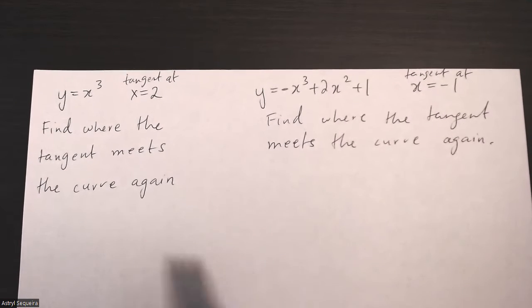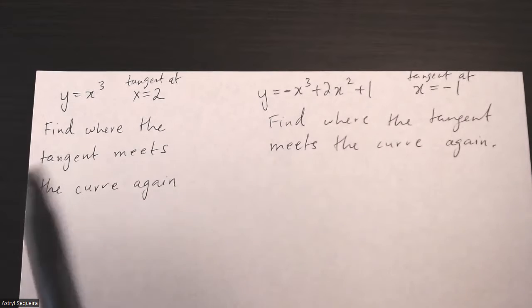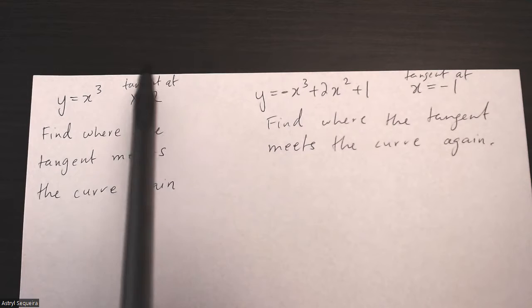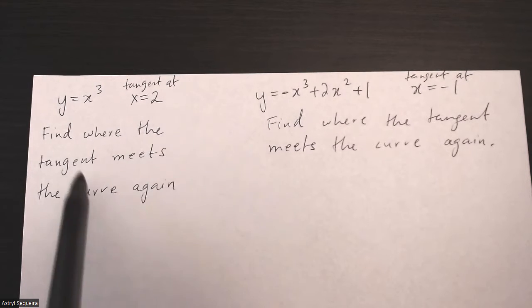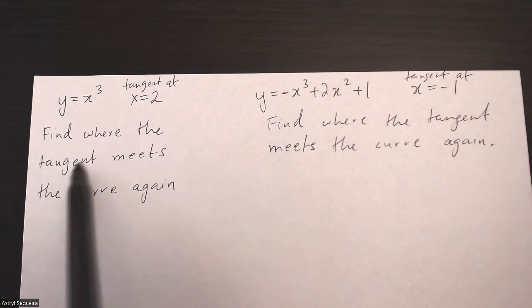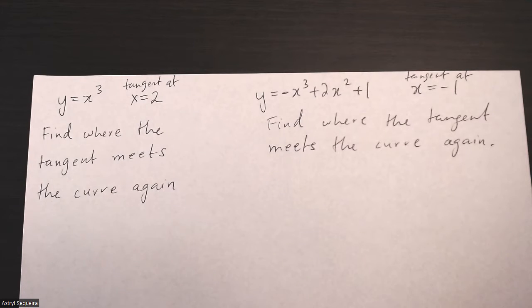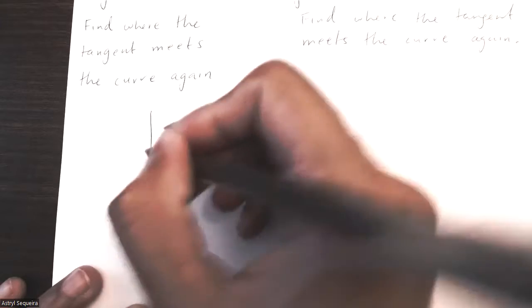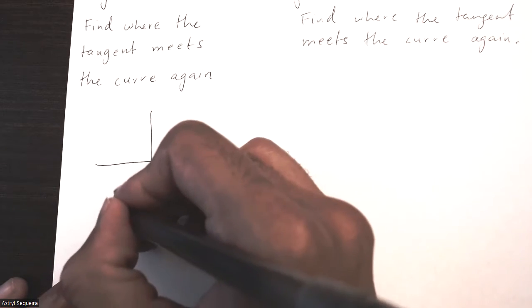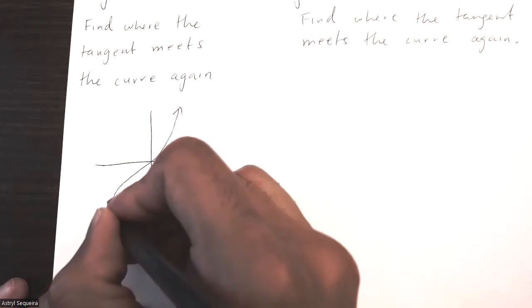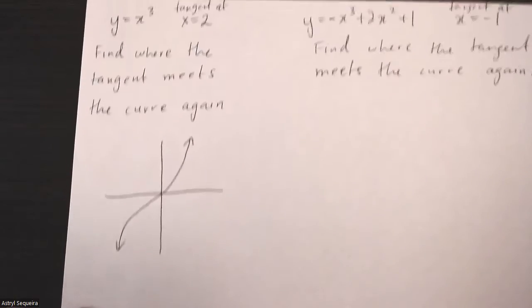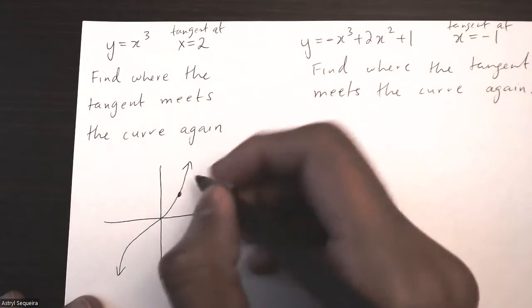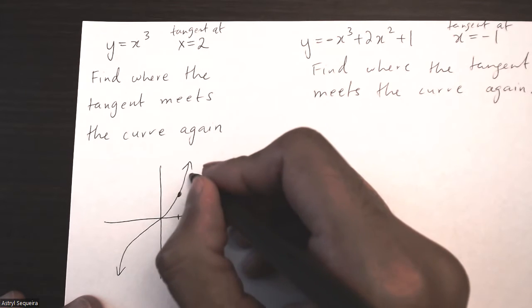In this video we have two questions. We have the equation y equals x cubed, a tangent line at x equals 2, and we need to find where the tangent meets the curve again. Let's sketch this situation out — y equals x cubed looks like this, and there's a tangent at x equals 2, so somewhere over here the x value is 2.